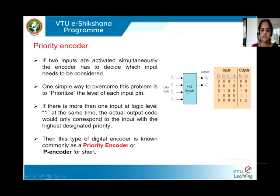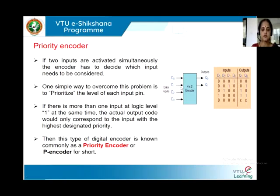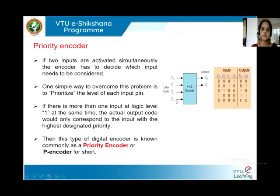Consider this example of a 4-to-2 encoder. We have four inputs. If any one of them is active at a time, the 4-to-2 encoder shall be able to give the output. On the other hand, if two or more inputs are active at the same time, the encoder will not be able to give the appropriate output. To overcome this, the input with the highest number is given the highest priority, and the one with a lower number is given lower priority.